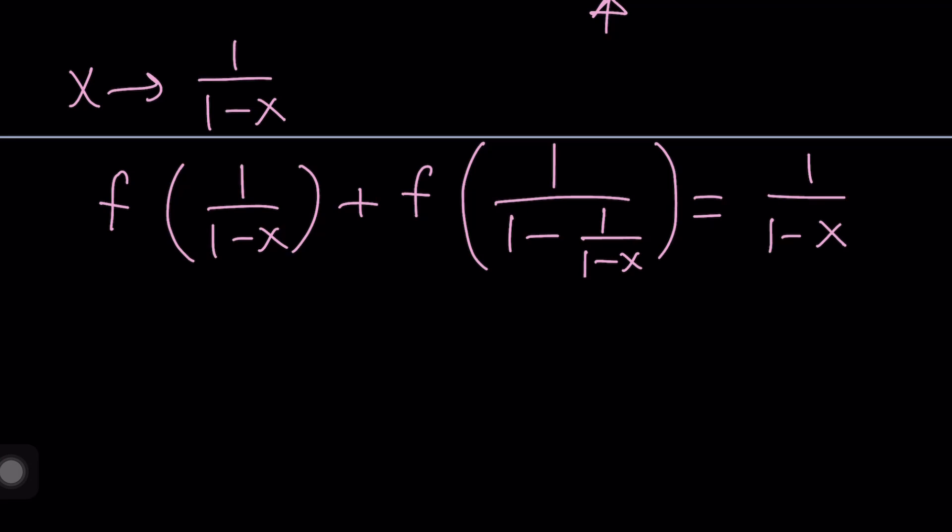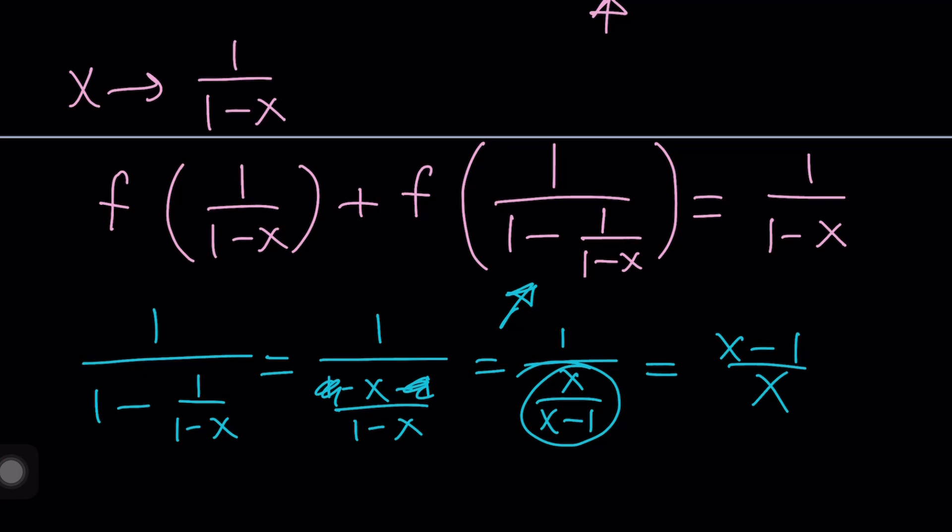Now we need to simplify this. How do you simplify that? Let's go ahead and pull it out, simplify, and then we'll put it back. What is 1 over 1 minus 1 over 1 minus x? Great. Let's make a common denominator at the bottom. That will be 1 minus x minus 1 over 1 minus x. 1 is going to cancel out. That's going to leave us with minus x over 1 minus x, which we can write as x over x minus 1. And if you flip this, you're going to get x minus 1 over x. Great.